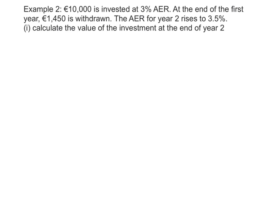This next example is a little bit trickier. We're told that €10,000 is invested at 3% AER, but at the end of the first year a certain amount of money is withdrawn, and the interest rate in the second year changes. Unfortunately we can't use our formula straight away for the entire question — it needs to be split into two separate parts. One way I like to lay this out is using a table to help visualise it.